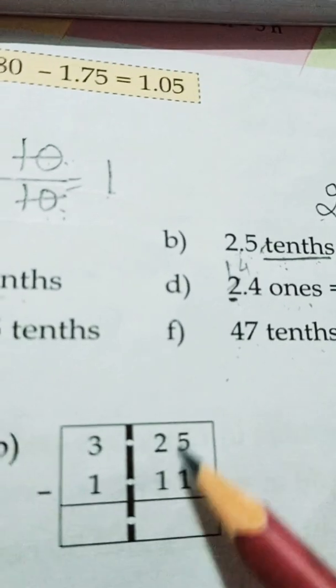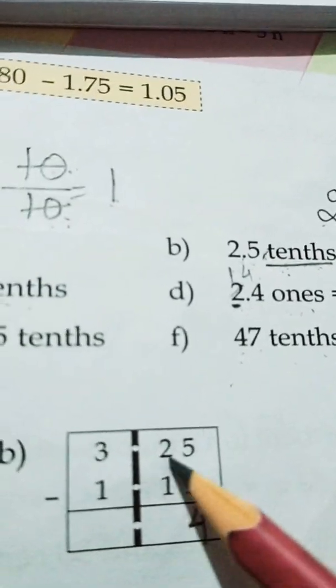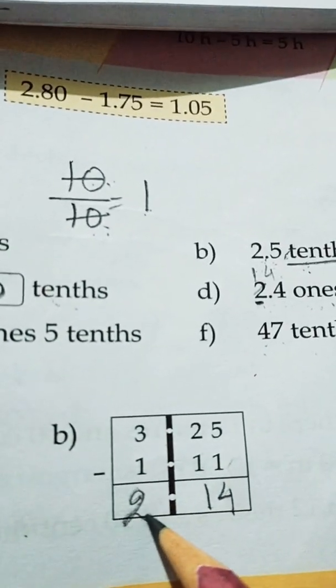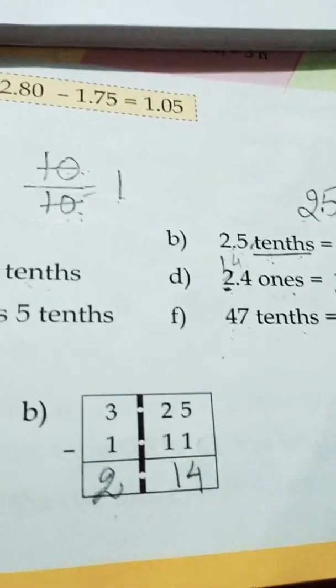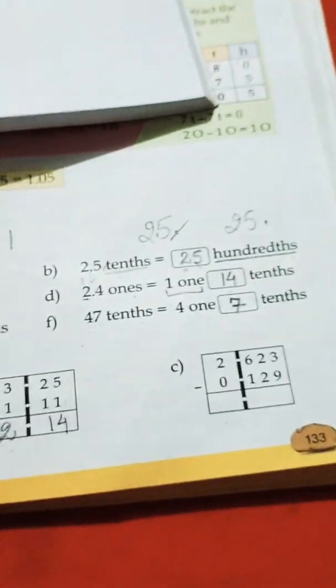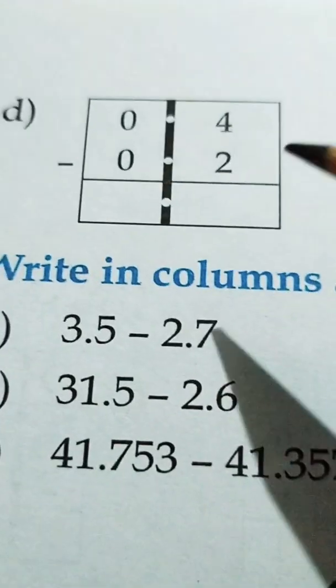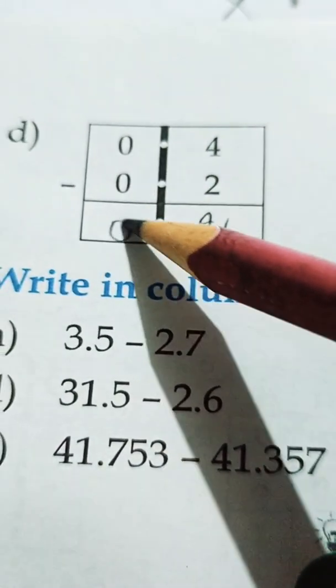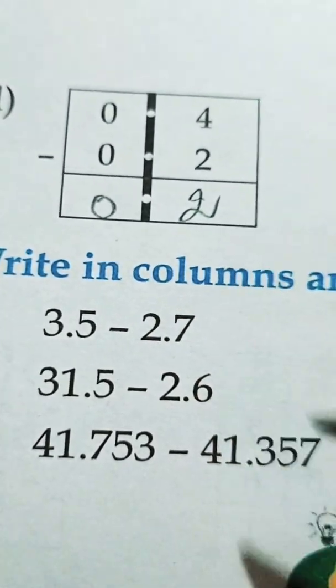In B part: 5 minus 1 is 4, 2 minus 1 is 1, and 3 minus 1 is 2. So the answer is 2.14. C part, you will do by yourself. In D part, decimal is written after decimal. 4 minus 2 is 2, and 0 minus 0 is 0, so the answer is 0.2. E and F parts you will do by yourself.